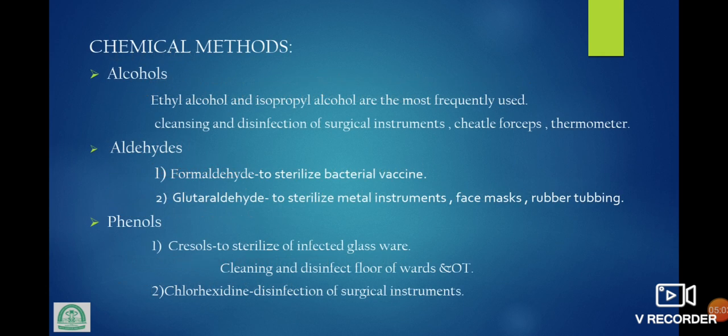Chemical method — alcohol: ethyl alcohol and isopropyl alcohol are the most frequently used for cleansing and disinfection of surgical instruments, Cheatle forceps, thermometers. Aldehyde: formaldehyde and glutaraldehyde. Formaldehyde to sterilize bacterial vaccines. Glutaraldehyde to sterilize metal instruments, face masks, rubber tubing. Phenol: cresol, chlorhexidine. Cresol to sterilize infected glassware, cleaning and disinfecting floors and operation theaters. Chlorhexidine for disinfection of surgical instruments.